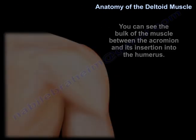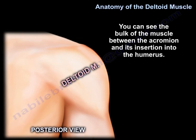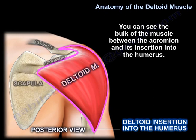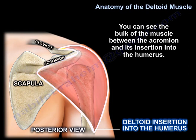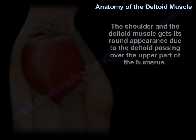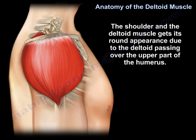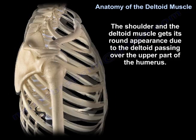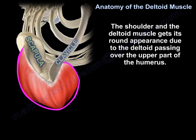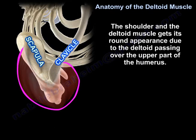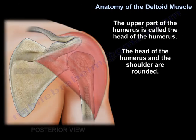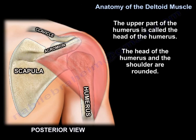You can see the bulk of the muscle between the acromion and its insertion into the humerus. The shoulder and the deltoid muscle get their round appearance due to the deltoid passing over the upper part of the humerus, which is called the head of the humerus. The head of the humerus and the shoulder are rounded.